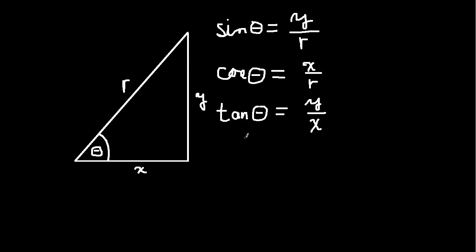So let me go over these again. Sine of theta — this is angle theta — sine is opposite, that's opposite side divided by hypotenuse. And the cosine of theta is given by opposite side divided by adjacent side, that's x divided by y. So these are the three critical trigonometric functions that we introduce in geometry: sine, cosine, and tangent.